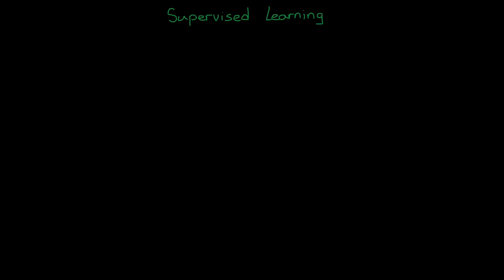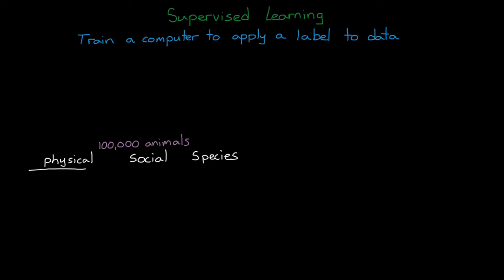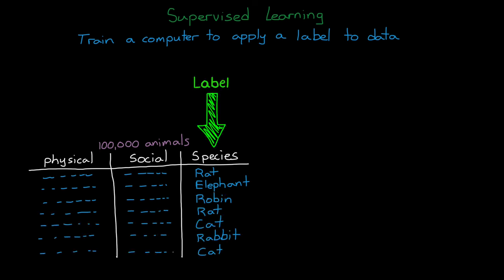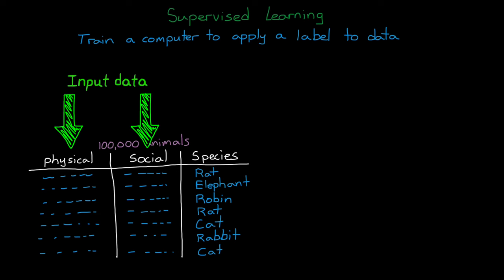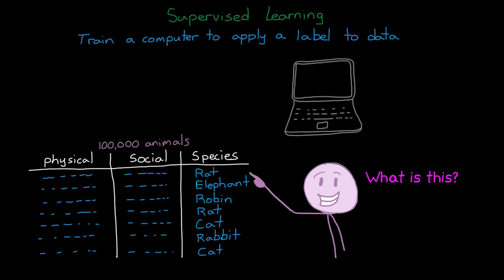Supervised learning, on the other hand, is different in a subtle way, in that we train the computer to apply a label to a given input. For example, let's say that one of the columns of our data set of animal features is the species. We can then treat species as the label, and the rest of the data as inputs into a mathematical model. Then we can use supervised learning to train our model to correctly label each set of animal features by inputting them in one at a time, letting the model guess the species, and then systematically tweaking the model based on whether that guess was correct or not.